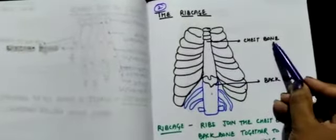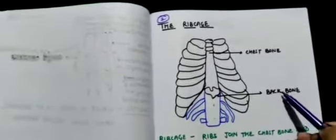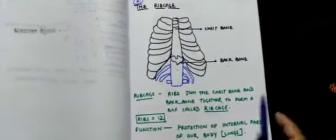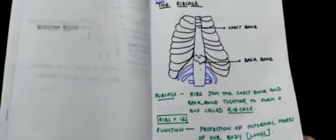Next is the rib cage. The front bone is known as the chest bone, and at the back is the backbone. The chest bone and backbone are connected with ring-like structures known as ribs. There are a total of 12 ribs — 10 are shown, and two are floating ribs. Ribs join the chest bone and backbone together to form a box called the rib cage, and its function is protection of internal parts — specifically the lungs.